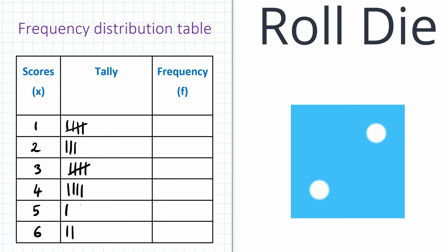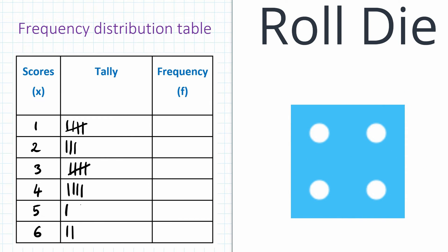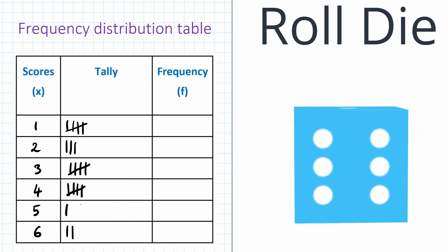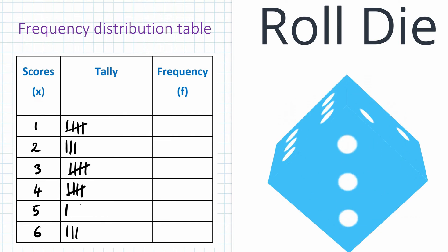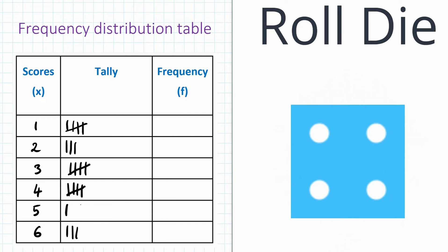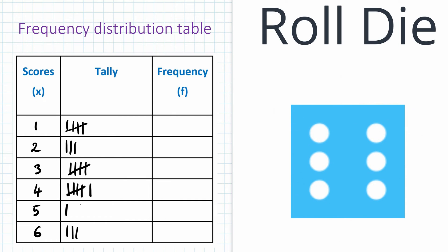Two — so we put two here. Four, four — we have five fours now, so you draw a line across so that you don't have to count, and you know that is five. It's easier to write down the frequency later on. Six — tally six. Four — we have four there. Six. Anyway, I can stop here now.